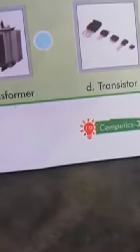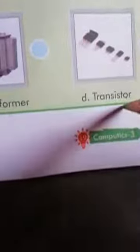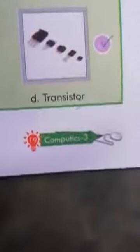देखो vacuum tube कौन सी generation में आया था? First generation में vacuum tube को invent किया गया था and second generation में transistor. So transistor vacuum tube से smaller and faster थे. So हम transistor पर right tick करेंगे.